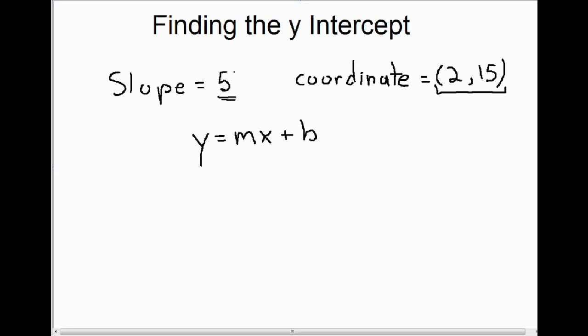So if we want to know what the y-intercept is for this line, well, we can start by substituting in our slope. Our slope here, we know, is 5. So instead of writing m, we can write 5. Now if I want to know what the y-intercept is, we're also told a coordinate on this line. And remember, the x and the y in the equation represent coordinates. So if I substitute in my x and y value from the coordinate into this equation, instead of writing y, I'm going to write 15, and instead of writing x, we're going to write 2.